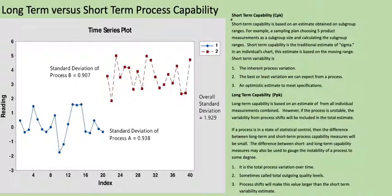Today we're going to talk about the difference between long-term and short-term process capability. If you're a quality practitioner, you're often asked to provide some kind of capability index — it may be CPK or PPK — which is a way to show a process's output against some kind of requirements.